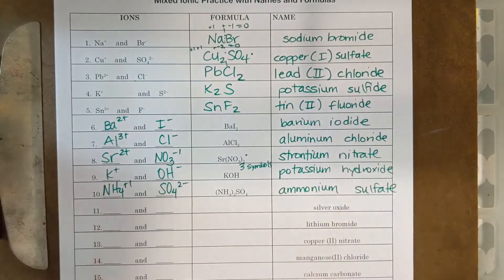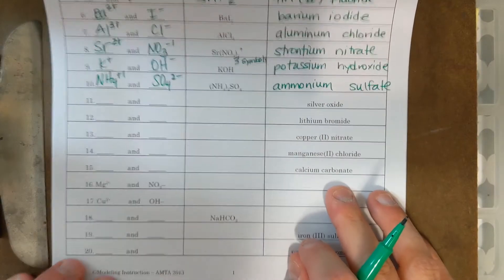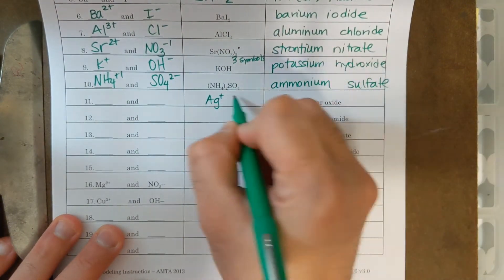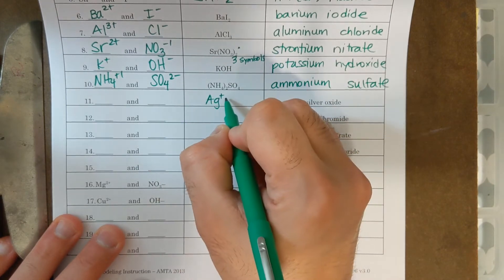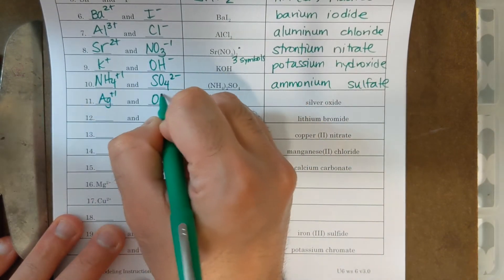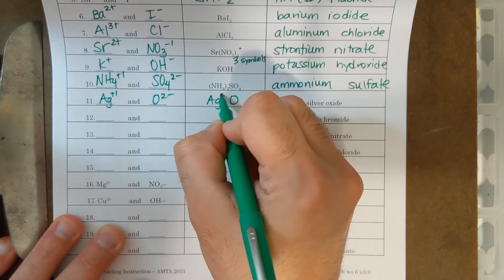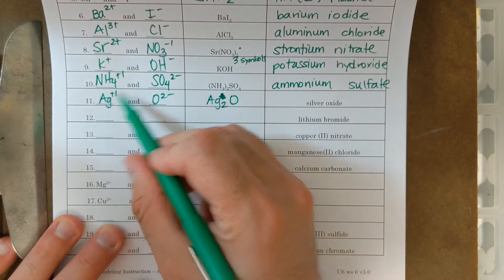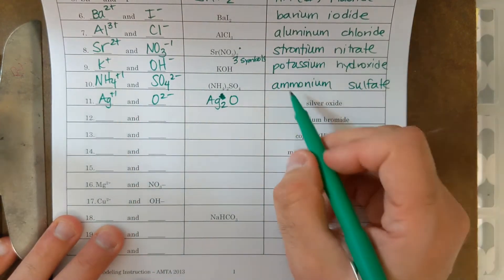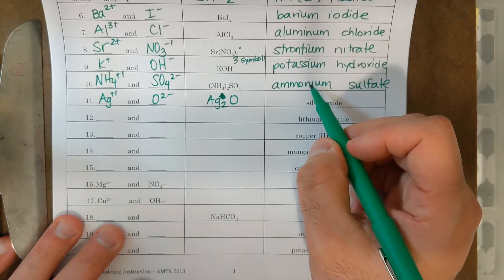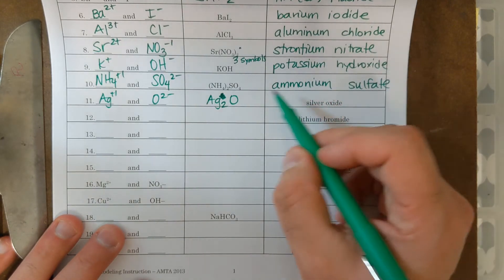Then I got the next one, I got silver oxide. Silver is AG plus, oxide, AG2O. AG plus, oxide is two minus. If I do the crisscross method, I should get AG2O. I'm going to need two AGs for one O. And notice how there's no Roman numeral. It could appear that silver is a transition metal, but it only forms one charge, so it doesn't need a Roman numeral.